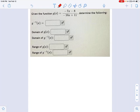I'm given here a rational function, g of x, and told that it's equal to negative 7x minus 8 over negative 10x plus 11.